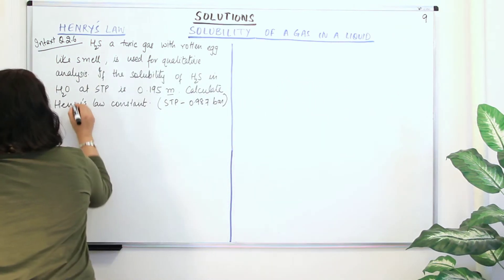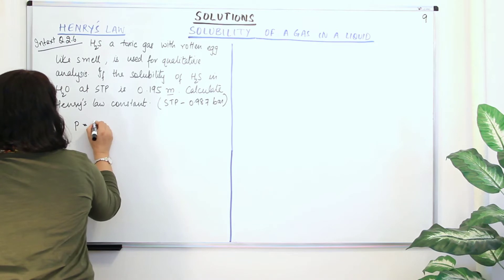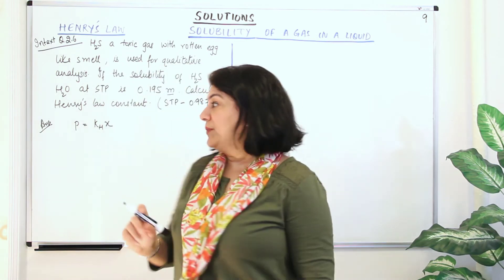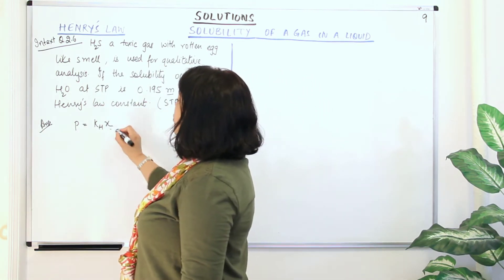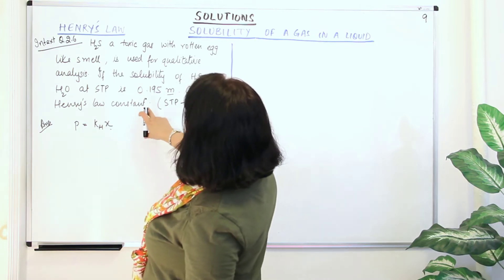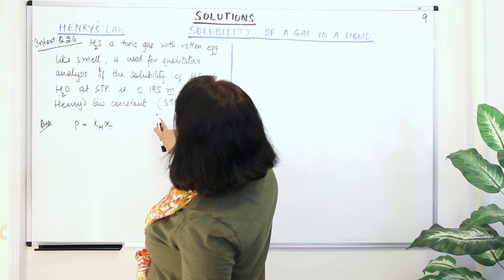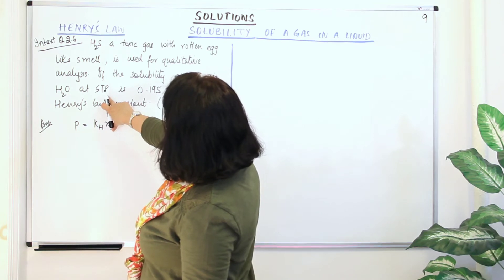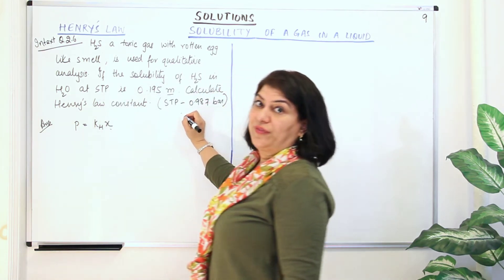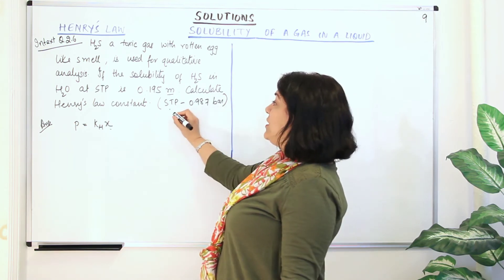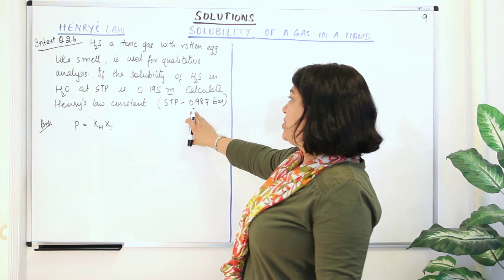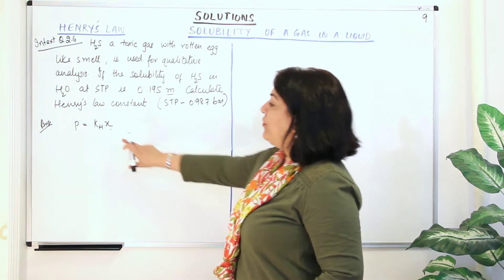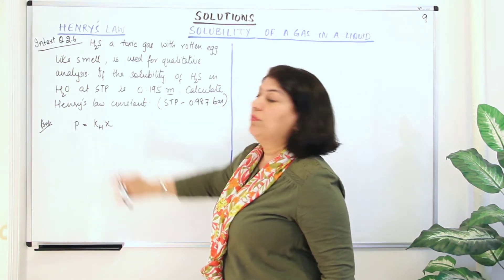According to Henry's Law, P = KH·x, where P is the partial pressure of the gas and x is the mole fraction of the solute. We need to find the mole fraction of the solute. The partial pressure at STP — since solubility is given at STP — the pressure in bars at standard temperature and pressure is 0.987 bar. We have the pressure; we need to find KH, but for that we need to know the mole fraction.